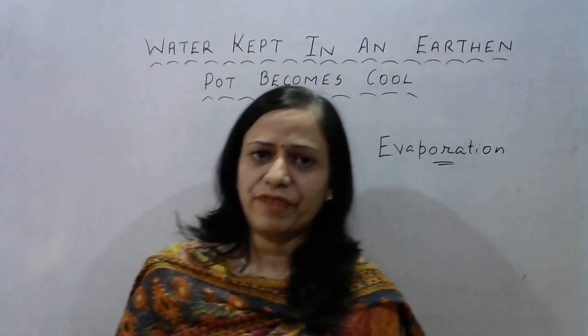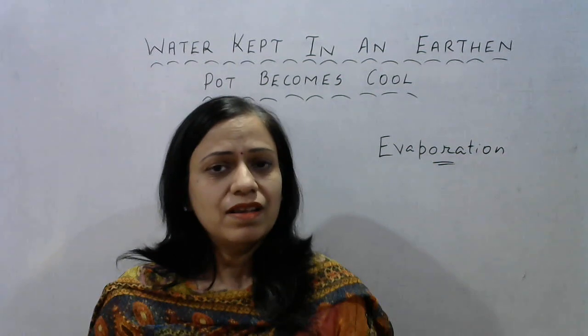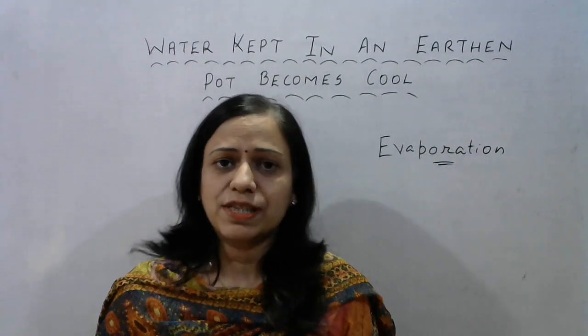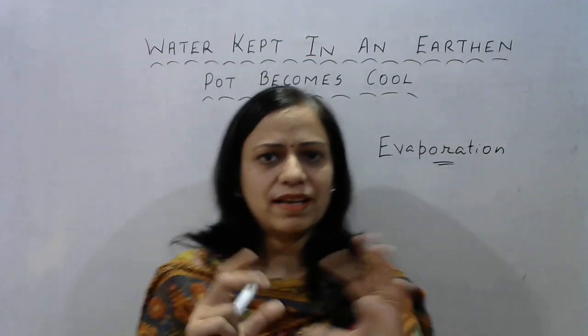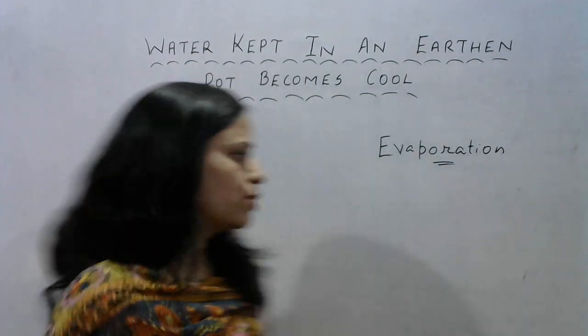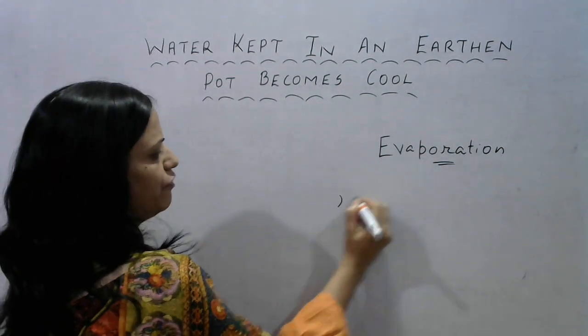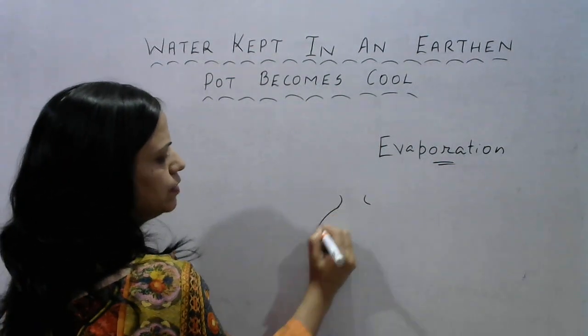What is an earthen pot made up of? It's made up of clay. Clay, we all know, is porous, so the earthen pot itself is porous. What happens exactly is that if this is an earthen pot with some water in it...